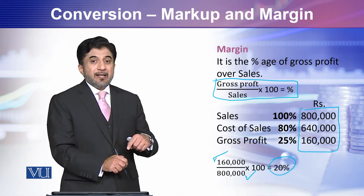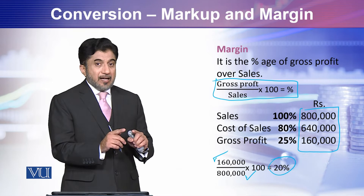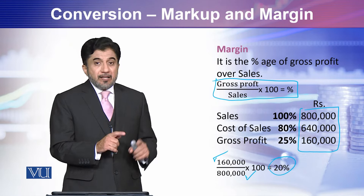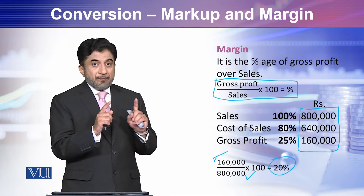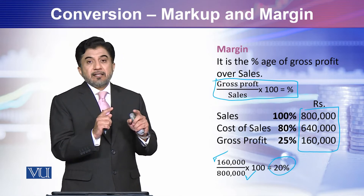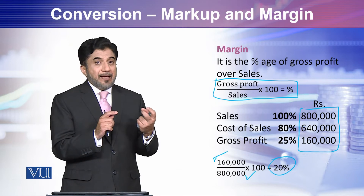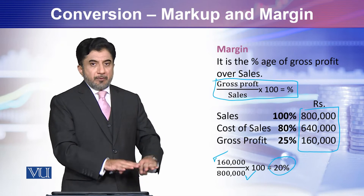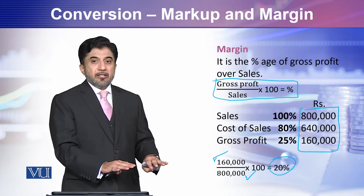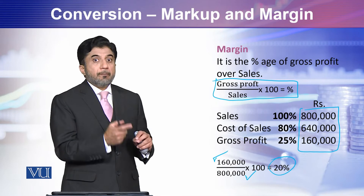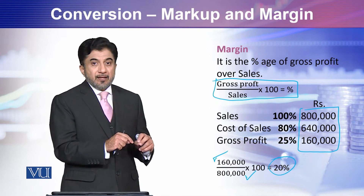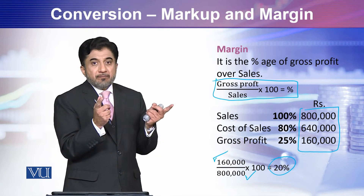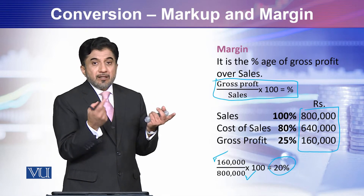So Gross Profit divided by Sales times 100 gives you margin. Now notice the major difference between these two: in markup, the base — meaning the denominator — is Cost of Goods Sold, while in margin, Sales is the base. The numerator remains the same in both, which is Gross Profit.